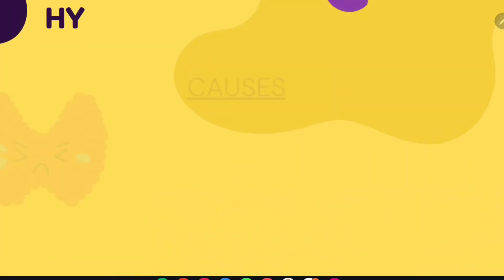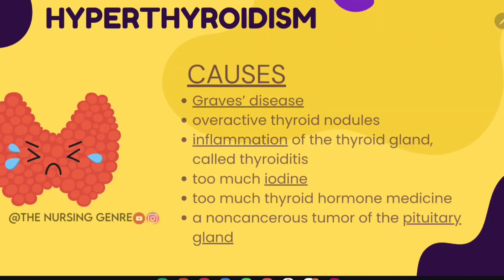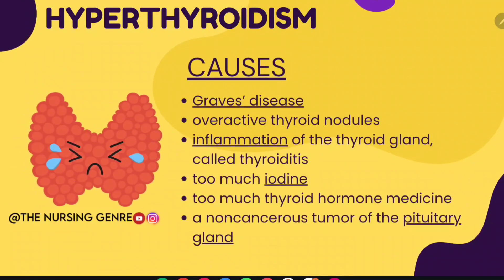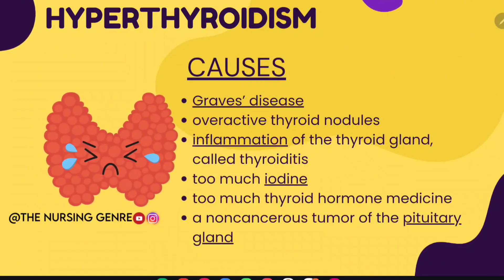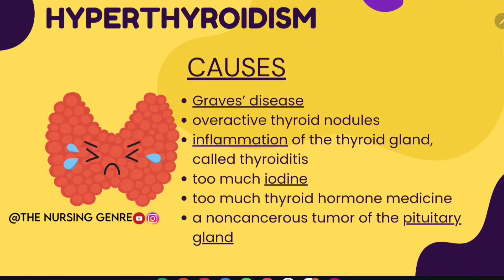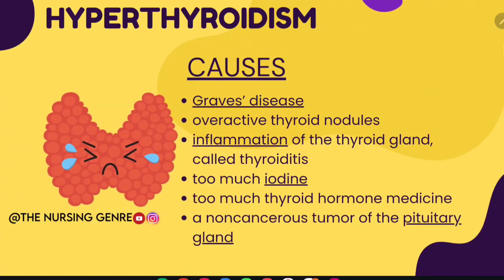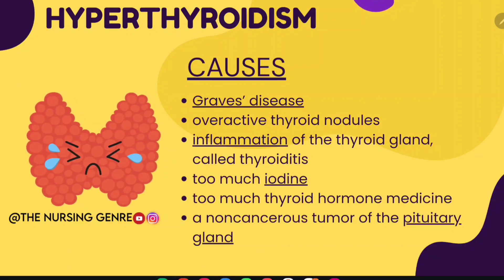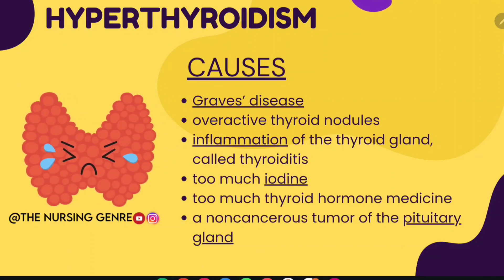Causes of hyperthyroidism include Graves' disease, overactive thyroid nodules, inflammation of the thyroid (thyroiditis), too much iodine consumed, consuming too much thyroid hormone medicine, and a non-cancerous tumor of the pituitary gland.